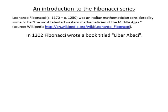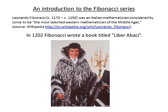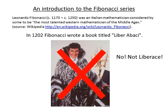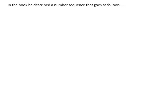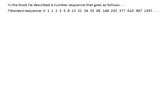In the year 1202, Fibonacci wrote a book titled Liber Abaci. In the book, he described a number sequence that goes as follows.